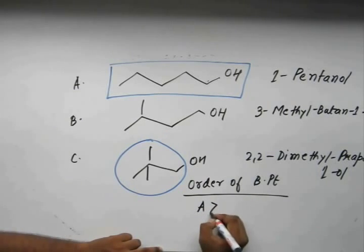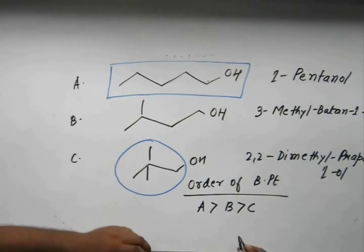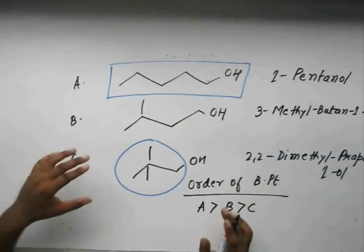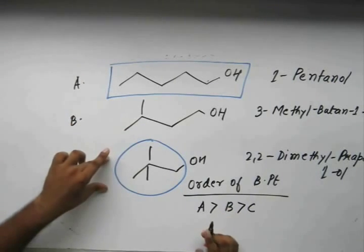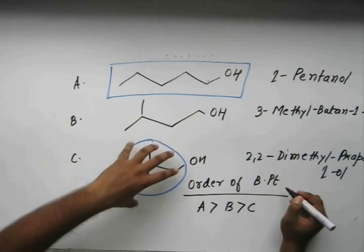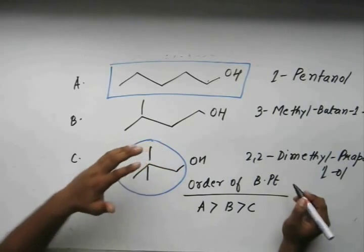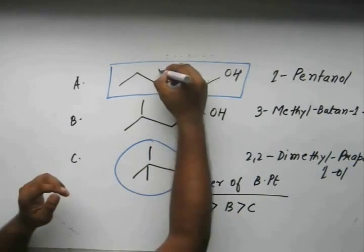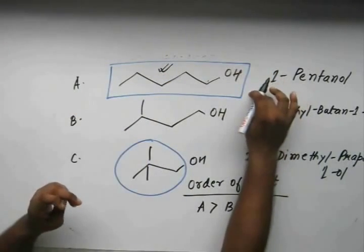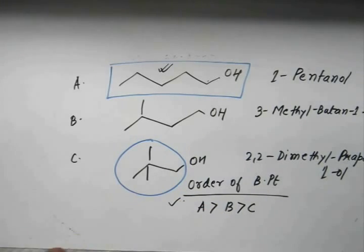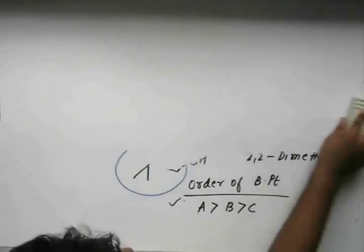The order of boiling point in this case is A greater than B greater than C. Not to mention that these are of comparable or equal molecular masses. When branching increases, boiling point decreases because the molecule gains a spherical shape, which has less surface area than a linear or straight-chain alcohol. Because of this, Van der Waals forces decrease, thus decreasing the boiling point. This was nothing very new from what we learnt in the hydrocarbon chapter.